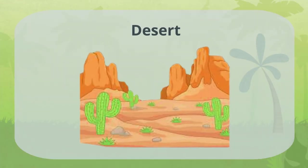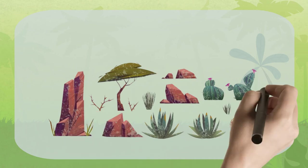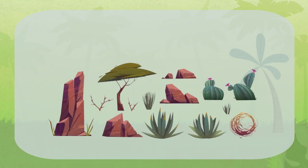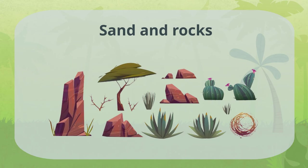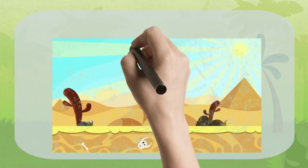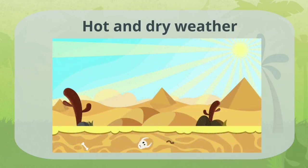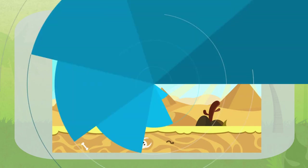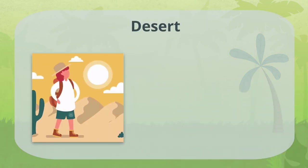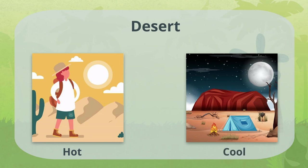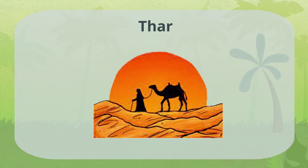Desert: Deserts are very dry parts of the land. They are mostly made up of mounds of sand and rocks. Due to extremely hot and dry weather, very little or no plants grow there. The daytime in the desert is very hot, but nighttime is often cool. Thar is the largest desert of Pakistan.